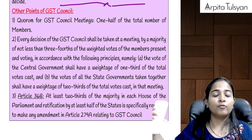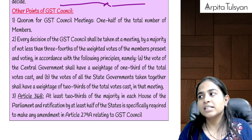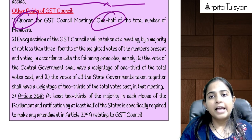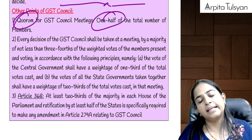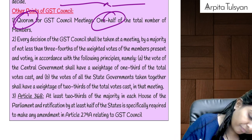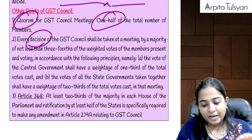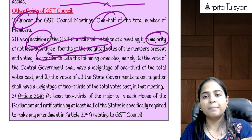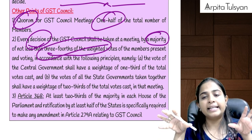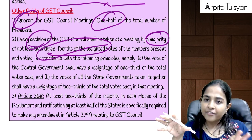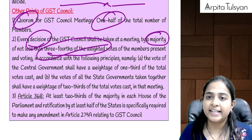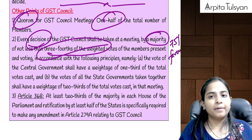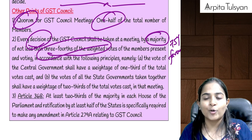To take all these decisions, the GST Council has to conduct meetings. For a valid meeting, a quorum must be present — minimum half of the total number of members should be present. Whatever decision is taken in that meeting should be approved by a majority of three-fourths of the weighted average votes. Calculate what percentage voted in favor from the Central Government, and what percentage from the State Government — give them weights: Central Government weight of one-third and State Government weight of two-thirds. Calculate the weighted average, and you should get at least 75% who voted in favor. Only then will that decision be considered as passed.